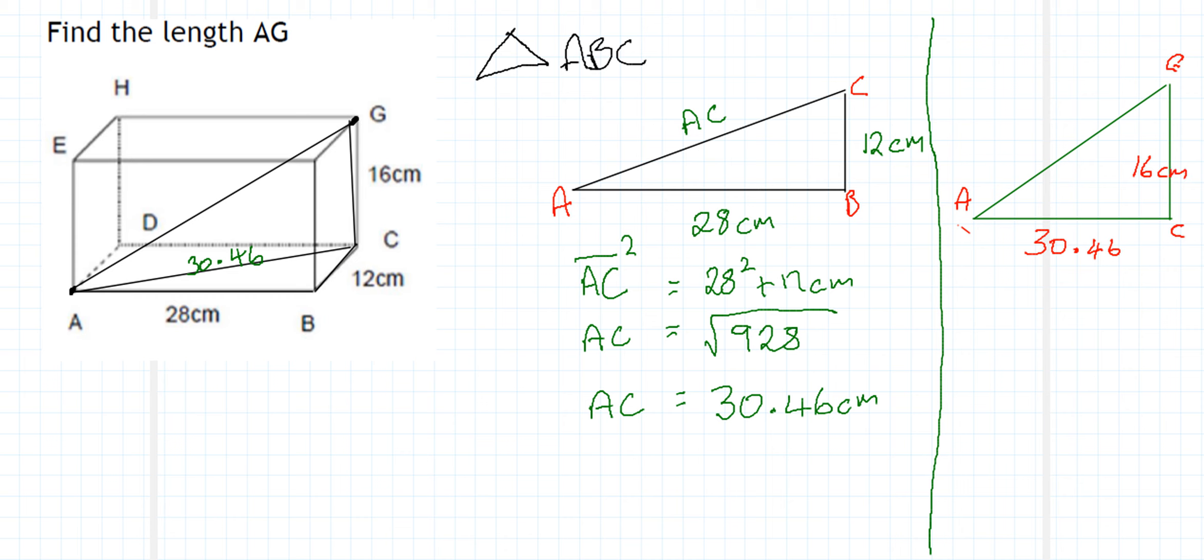And again, we're looking for the hypotenuse of this. So we're going to be using the plus version of the equation again. And when we substitute that into the equation, we end up with 30.46 squared plus 16 squared. And when we put that through our equation, that equals the square root of 1184.